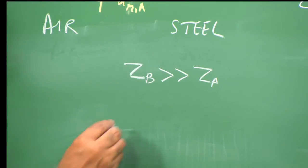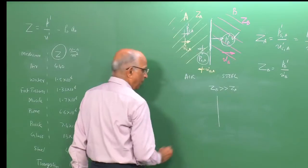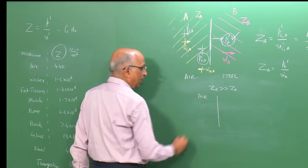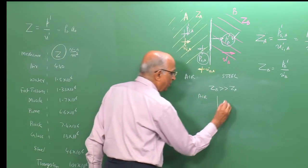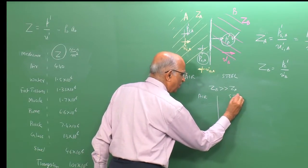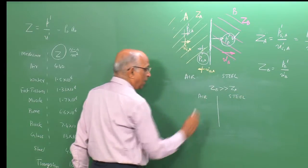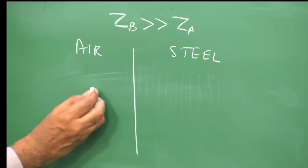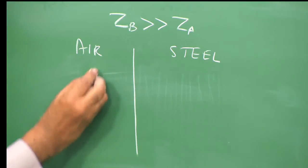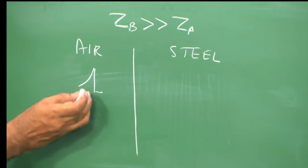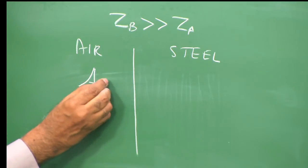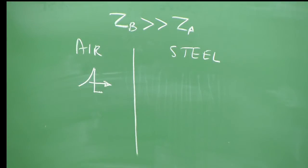So in medium A we have air, and the second medium is steel with much higher impedance. A shock wave with over-pressure p_ia is incident on the interface, traveling toward the wave.